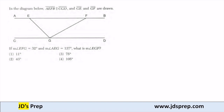What we know is that the measure of angle EFG is 32 degrees, so I know in here it's 32 degrees. I know the measure of AEG is 137 degrees, so I know this angle over here is 137 degrees. And what we're trying to figure out is the measure of EGF.